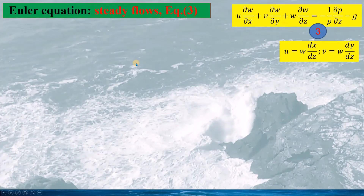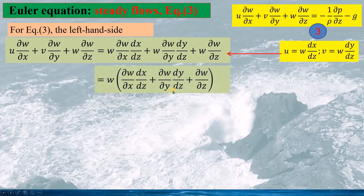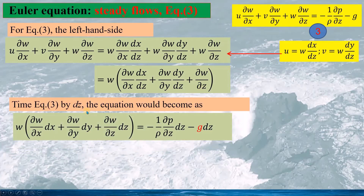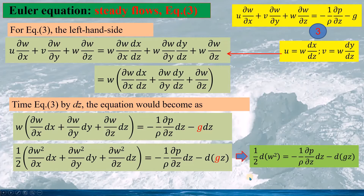For the third momentum equation, we multiply equation 3 by dz. The equation is very similar to the first two momentum equations, but with an extra term: minus g, because the gravitational force is in the opposite direction of z. We can rewrite this equation, and again the expression in brackets is the differential of w squared.